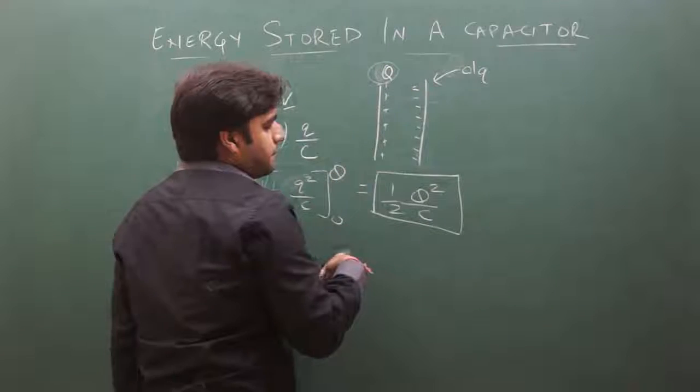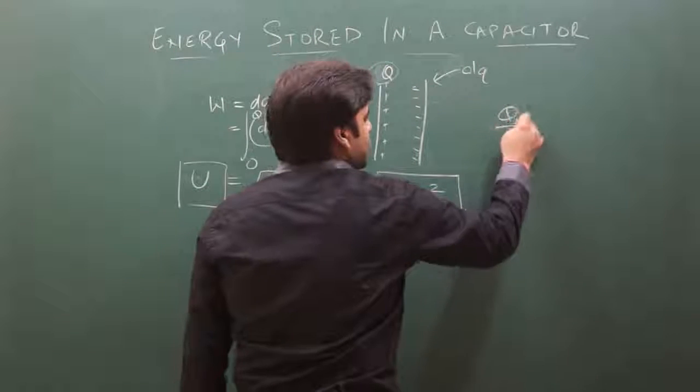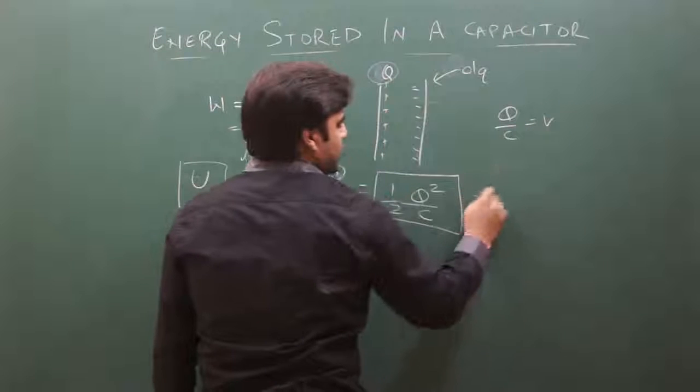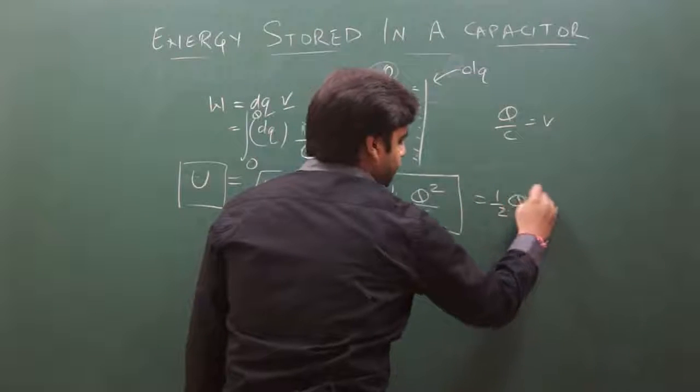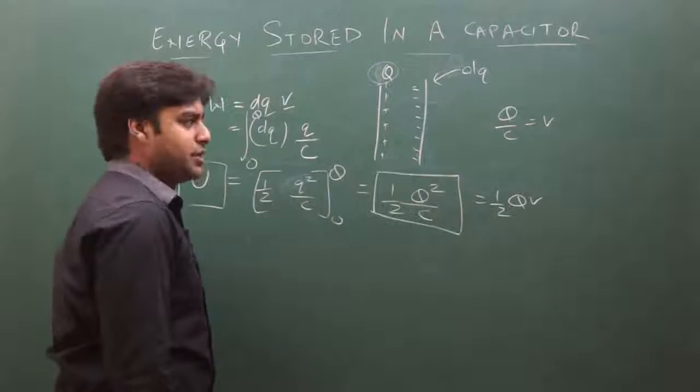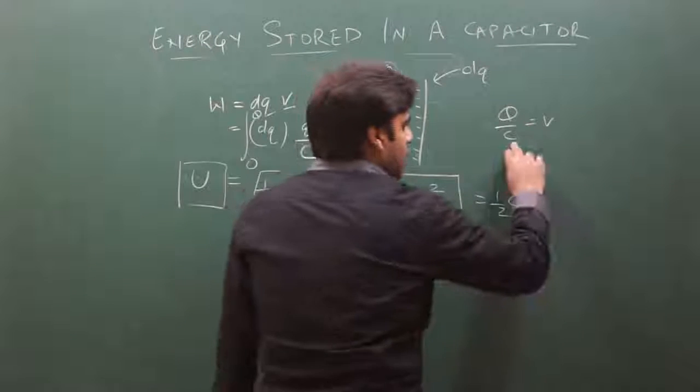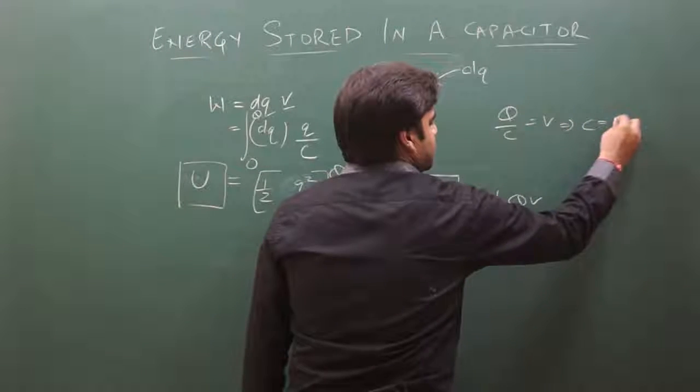We can also write this as U equals half Q times V, using the capacitance relationship C equals Q by V.